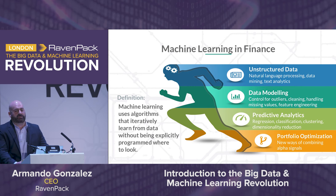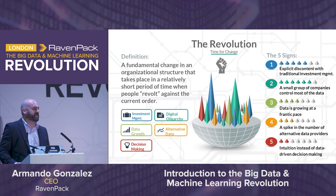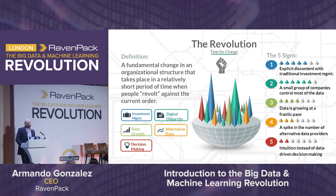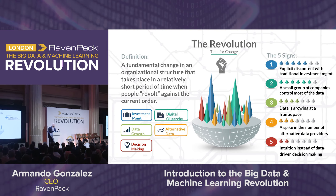With those two definitions in mind, what do we mean by a revolution? A revolution is defined as a fundamental change in an organizational structure that takes place in a relatively short amount of time — when people essentially revolt against the current norm or order. I think there's a revolution taking place in finance, specifically because of five signs. The first sign is that there's explicit discontent with the traditional investment management process — whether it's lack of accountability, lack of understanding, or lack of benchmarks. The old ways of managing money are essentially changing, and people are looking for more sophisticated, quantitative, and accountable ways of doing it.